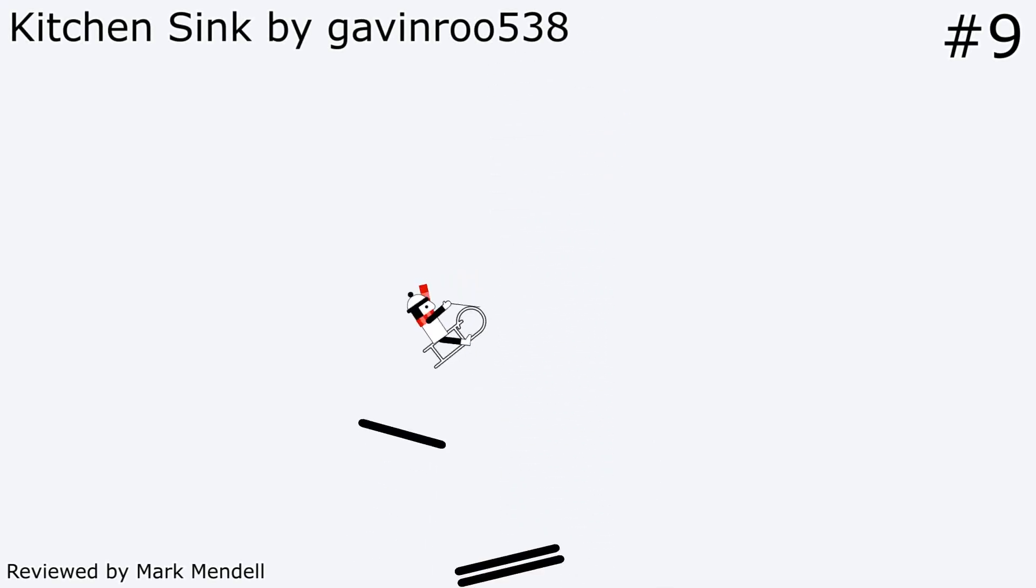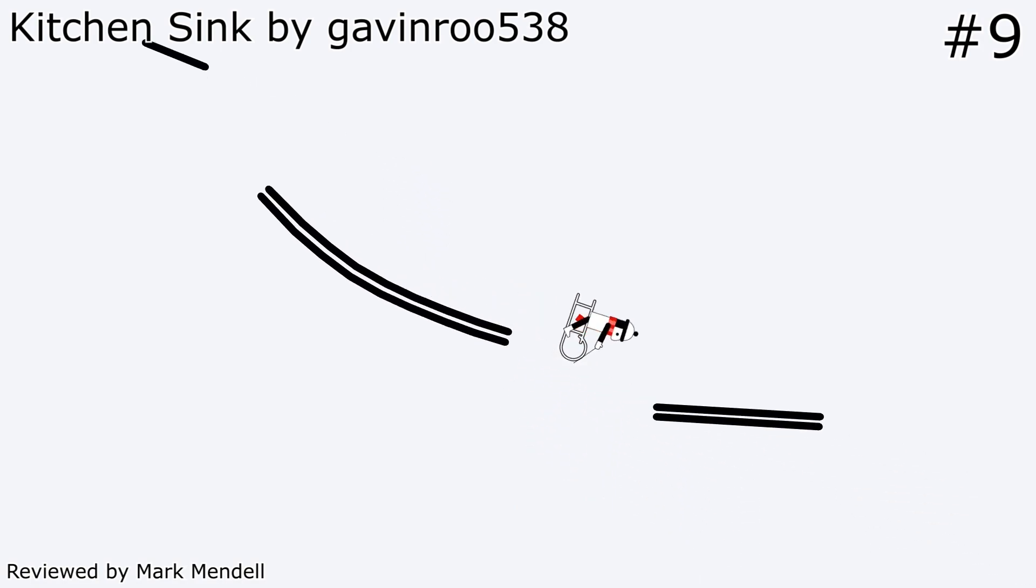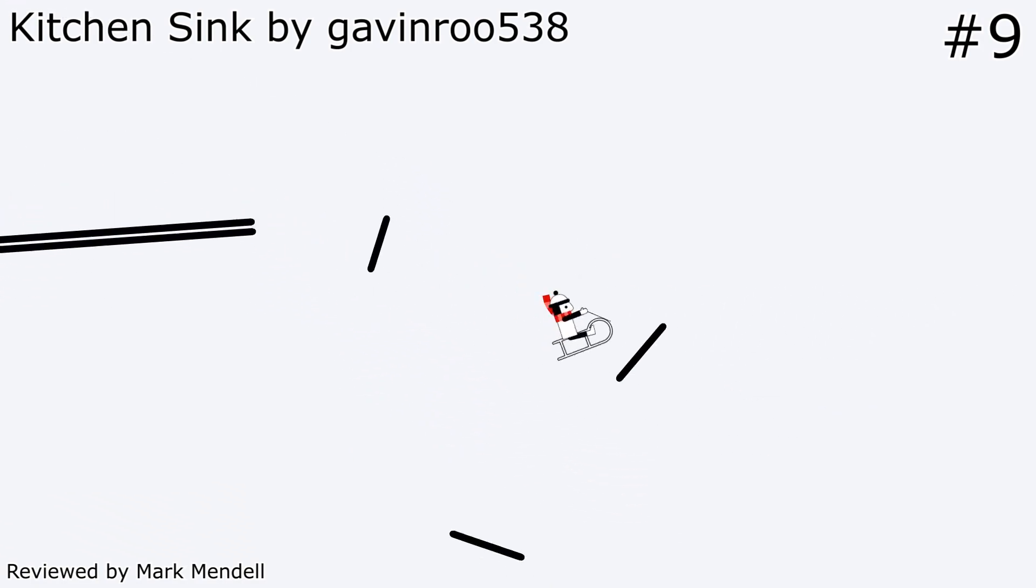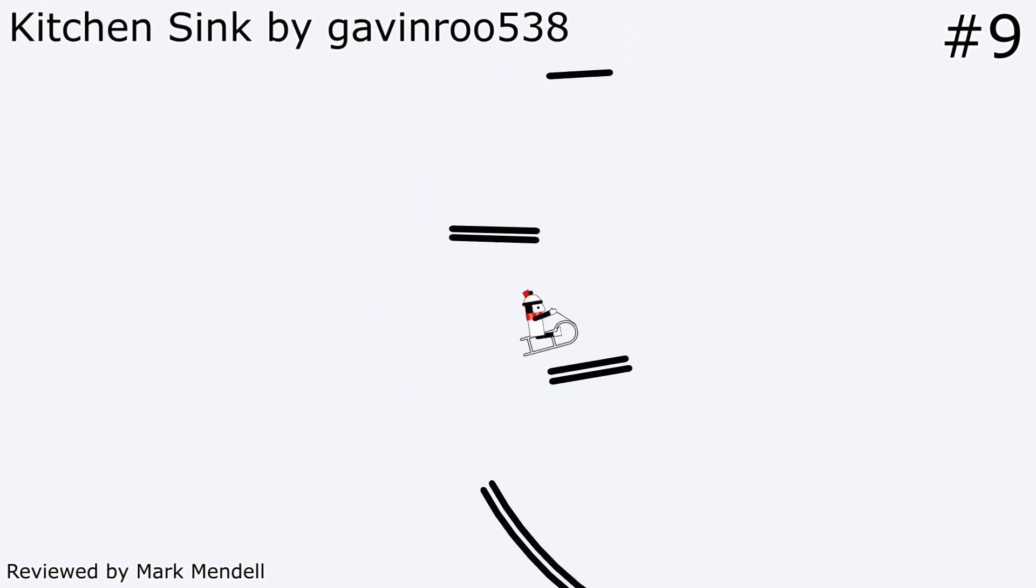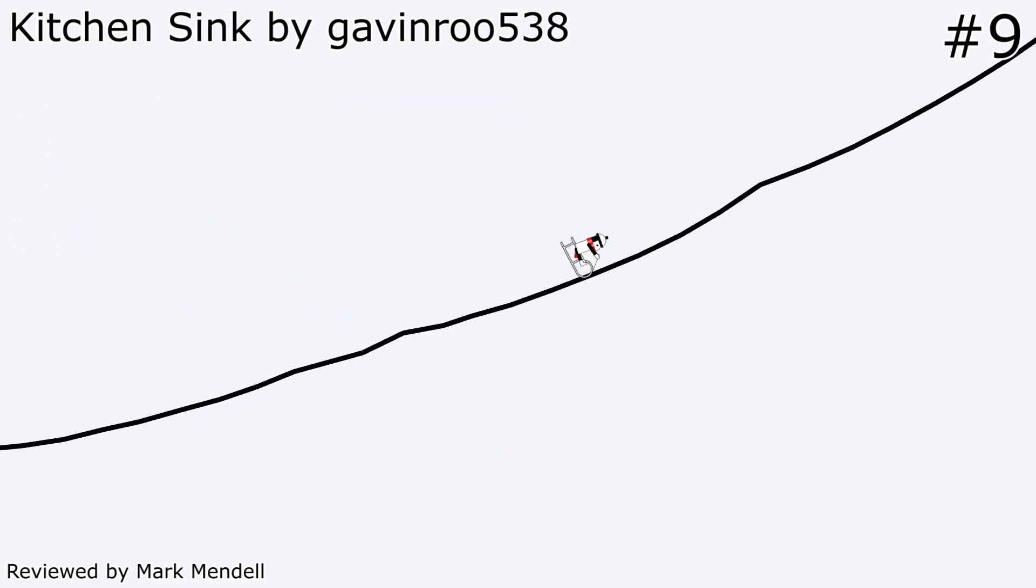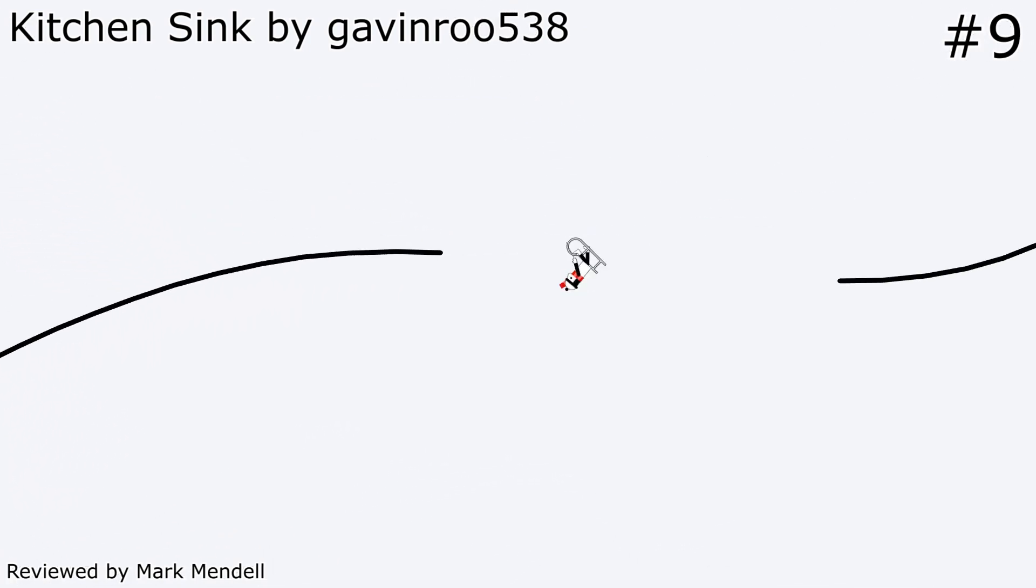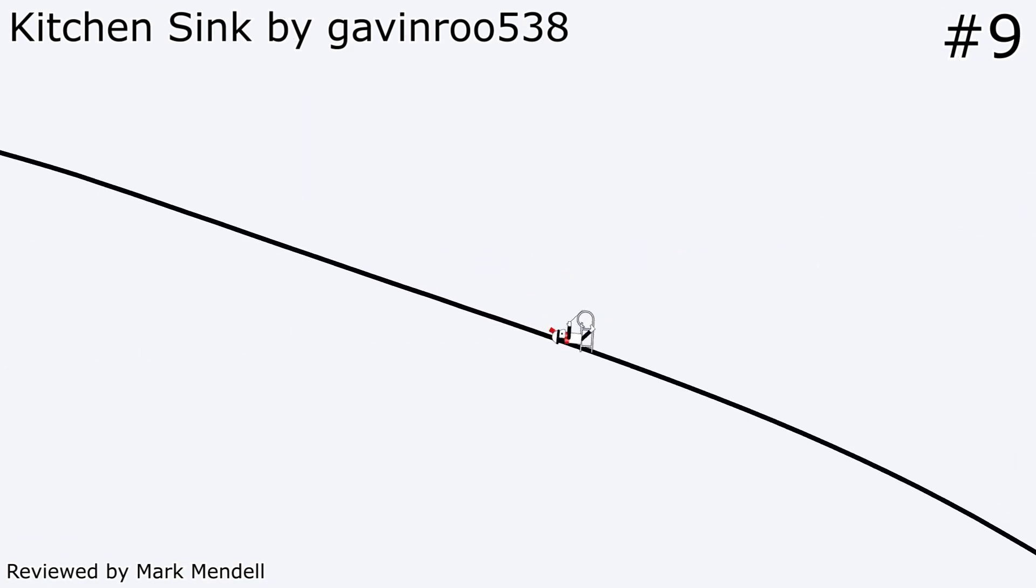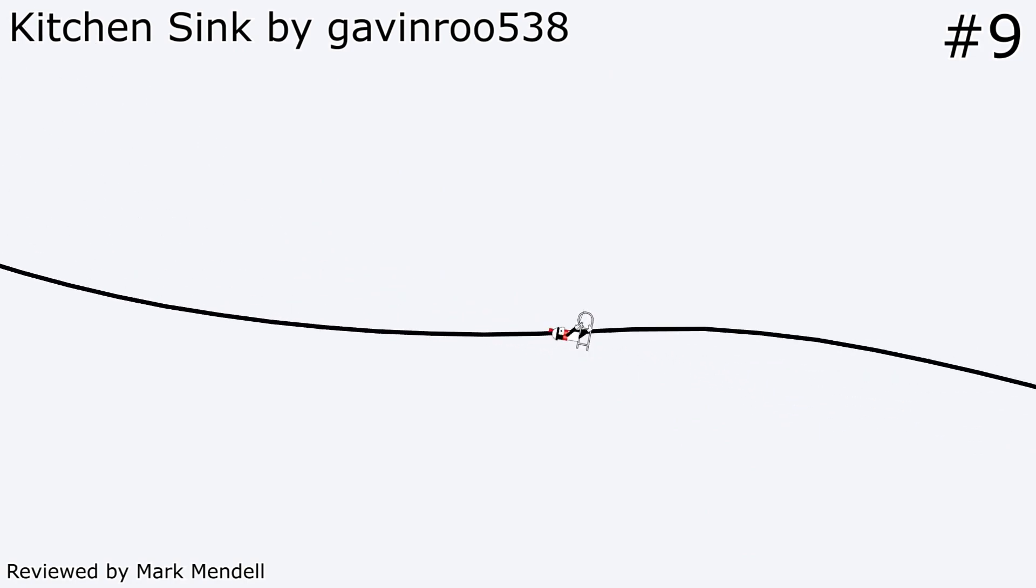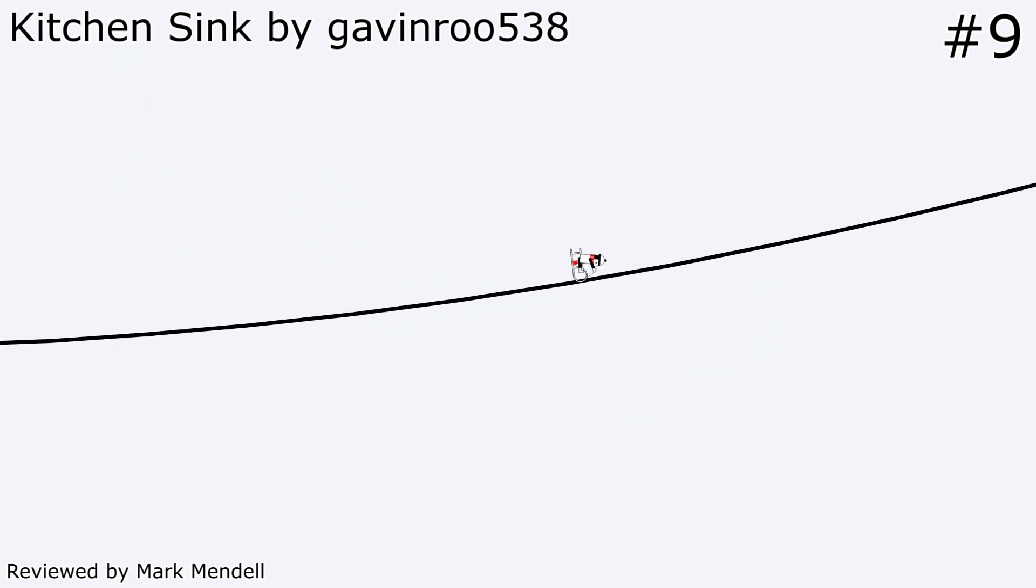Number 9, Kitchen Sink by Gavin Roo 538. Gavin Roo 538 matches 21 Pilots' Kitchen Sink on many levels of phrasing and arrangement. In the beginning, each beat of the clinking percussion is matched with a collision. Later, every note of the falsetto vocals is seen in Bosh pivoting around the line. There's a satisfying bounce with each drum hit of the last buildup. At the same time as these beat level matches, Bosh is often also in sync with the higher level phrase those beats are a part of.